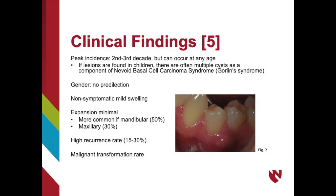The peak incidence of the OKC is the second to third decade, but it can occur at any age. Lesions are uncommon in children; however, if they are found, they are often a characteristic of nevoid basal cell carcinoma syndrome, or Gorlin syndrome, and there are often multiple cysts in the head and neck.